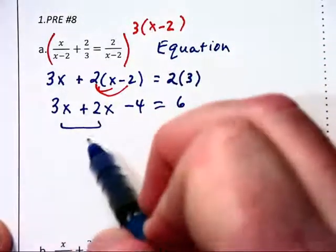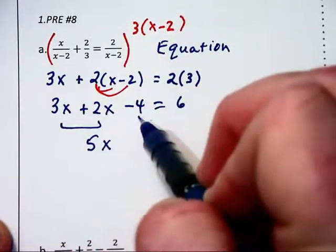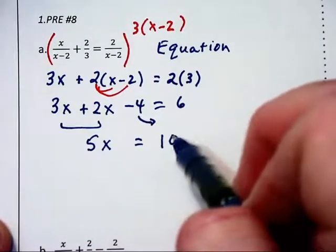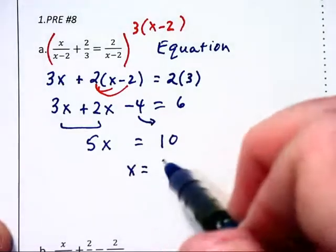Combining like terms, we have 5x. Let's bring the 4 to the right-hand side and say 5x = 10, and therefore x = 2.